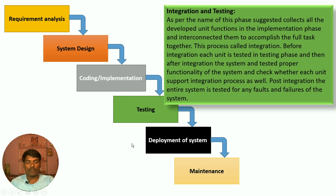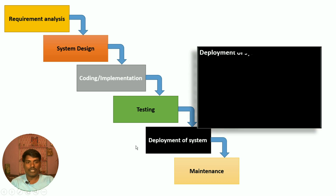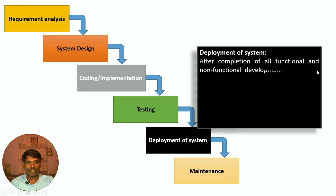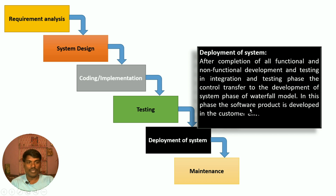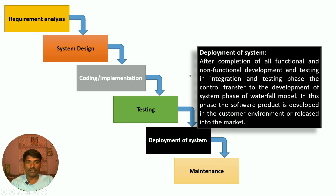The next phase is deployment. After completion of functional and non-functional development and testing, control transfers to the deployment phase. In this phase, the software product is deployed to the customer environment. The environment is released, for example at a particular URL.